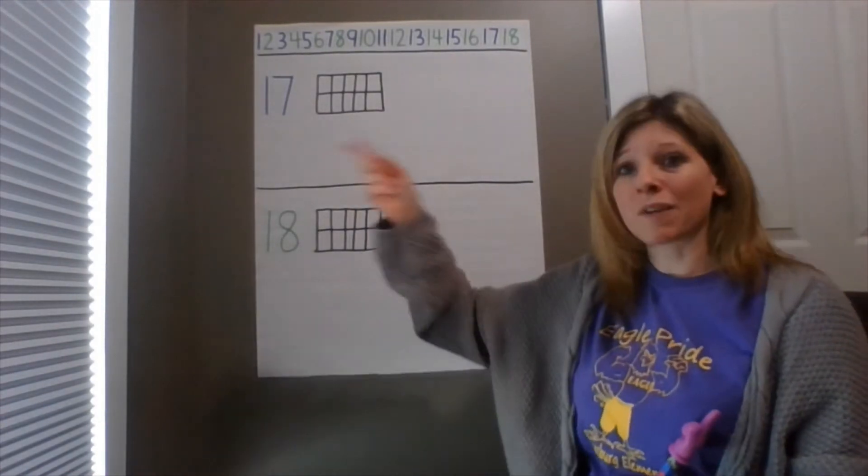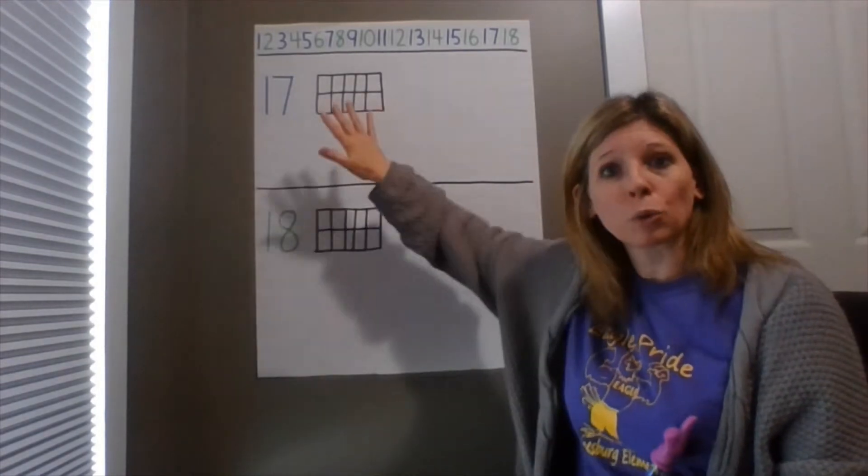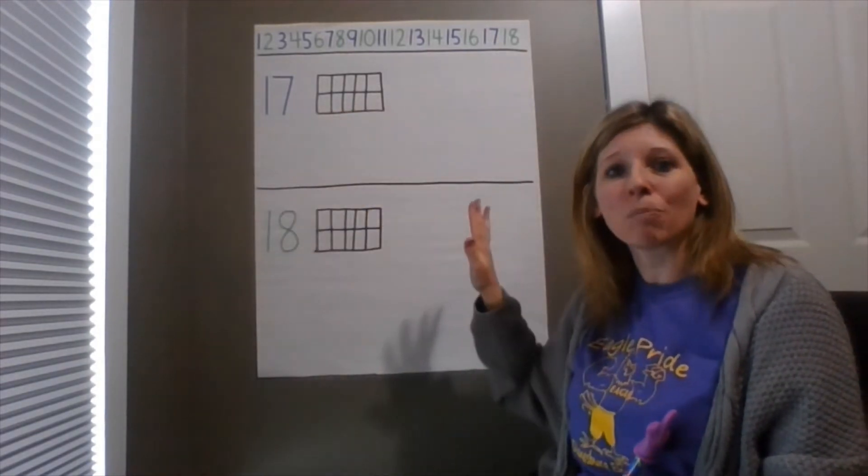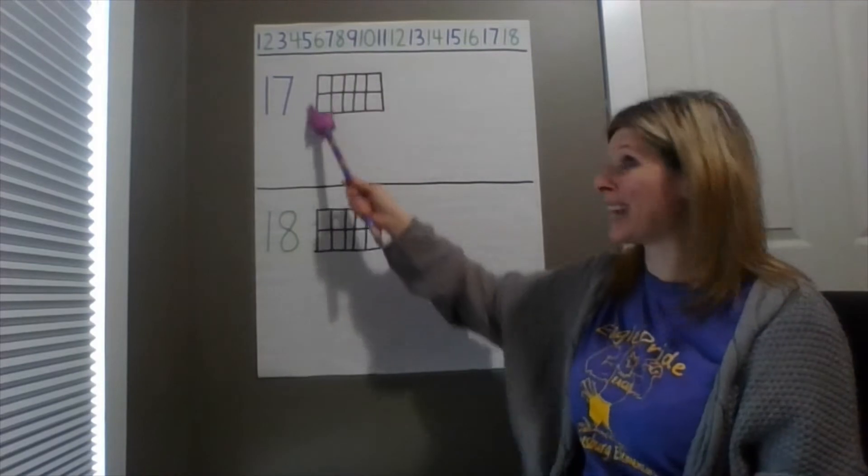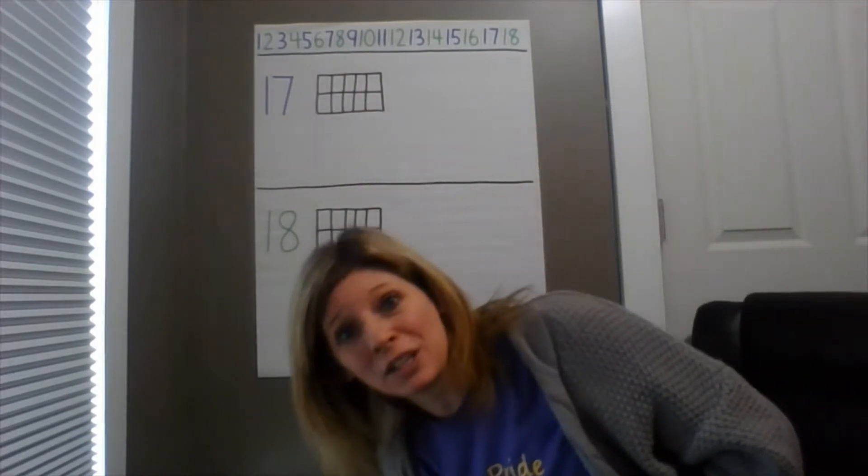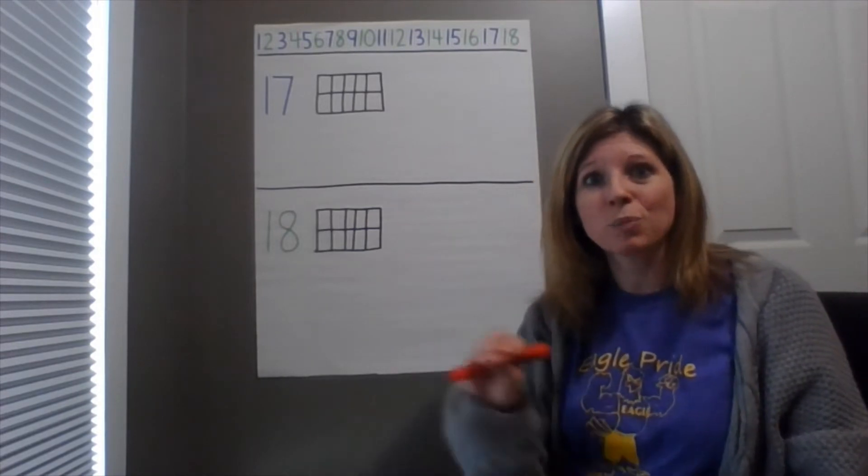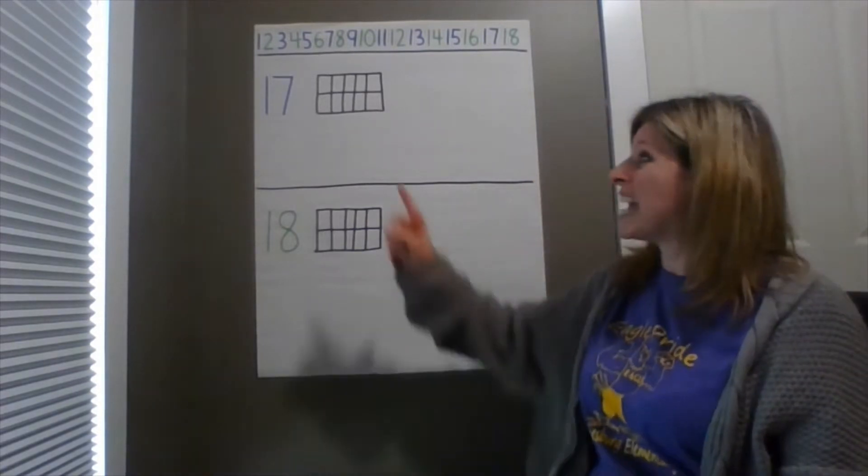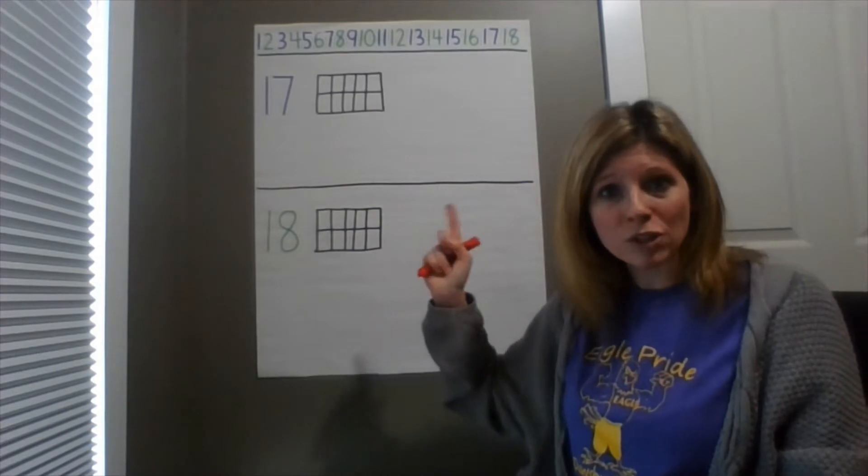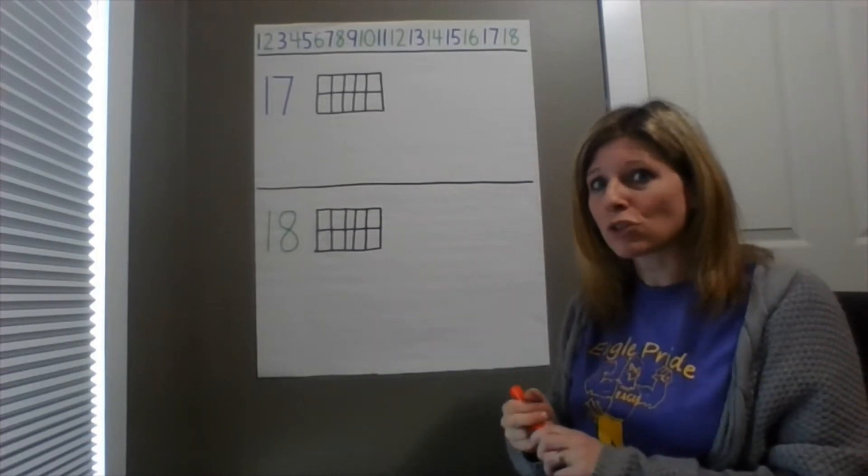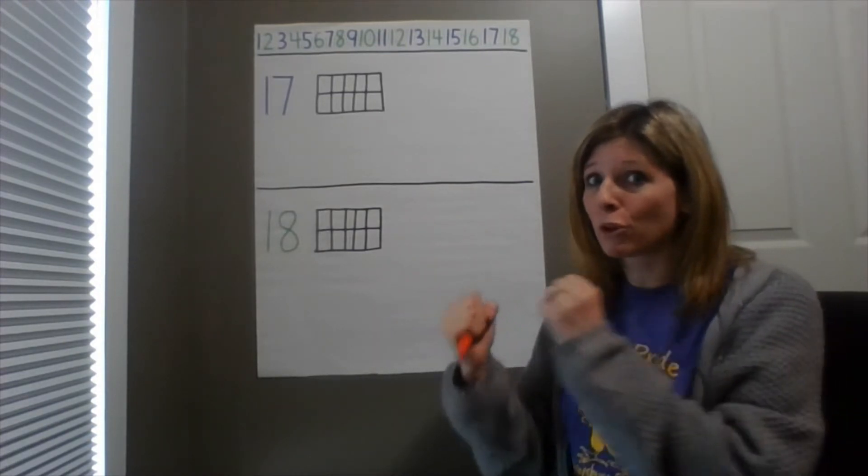Okay, so now let's talk about 17. Our teen numbers are a group of 10 and then some more. So right now I have an empty 10 frame, so I'm going to need your help to fill that 10 frame. As I draw my counters, you take your objects and put them in your 10 frame in the same order that I'm doing it. Make sure you're doing that with me so we can start with our group of 10.